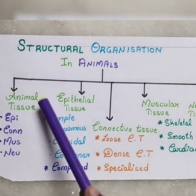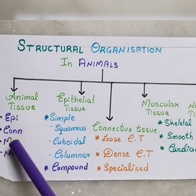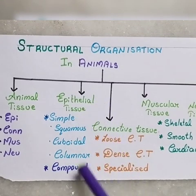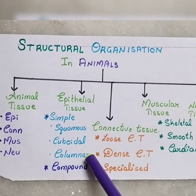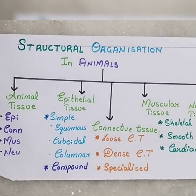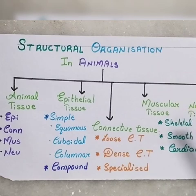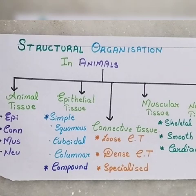First, we have animal tissues. These animal tissues are four types: epithelial tissue, connective tissue, muscular, and neural. Epithelial tissue is divided into two parts: simple and compound. Simple includes squamous epithelium, cuboidal epithelium, and columnar epithelium. Connective tissue is three types: loose connective tissue, dense connective tissue, and specialized connective tissue. Muscular tissue also has three subtypes: skeletal muscle, smooth muscle, and cardiac muscle. Finally, we have neural tissue. This is the overall chapter.